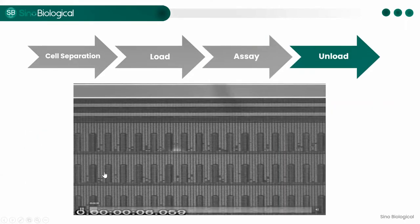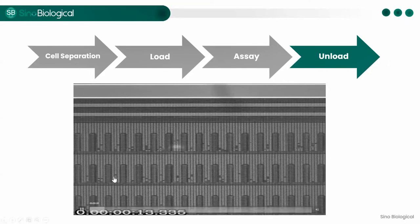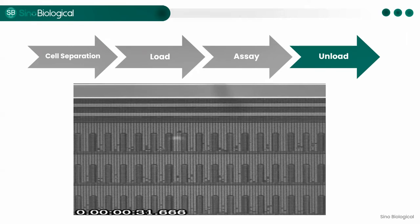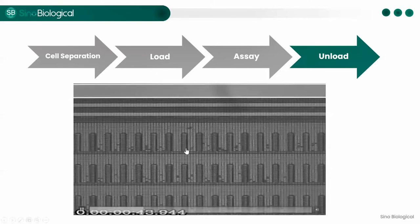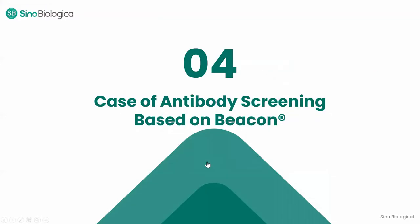After target clones are confirmed through validation tests, the target cells can be exported. The export is also performed using OEP technology through the Beacon system — cells are pushed out of the nanopans and flushed into the mobile phase. It is worth noting that in addition to exporting target cells, the Beacon system can also perform reverse transcription directly on the chip, directly obtaining the cDNA sequence of the target antibody, though the cost will be relatively higher.